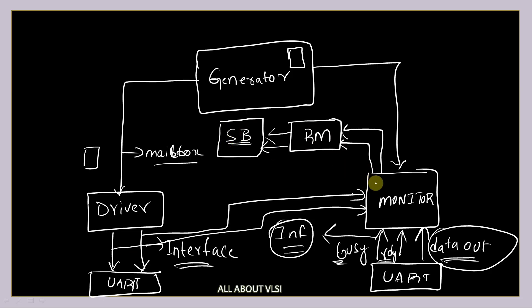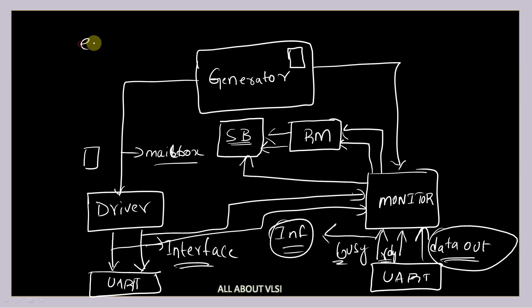The reference model outputs for a given set of inputs are sent to the scoreboard. The monitor also sends the actual design outputs to the scoreboard. The scoreboard compares the reference model output with the design output to check whether the design behavior matches the expected behavior. This is how we develop our testbench, and this entire structure is present inside our environment.